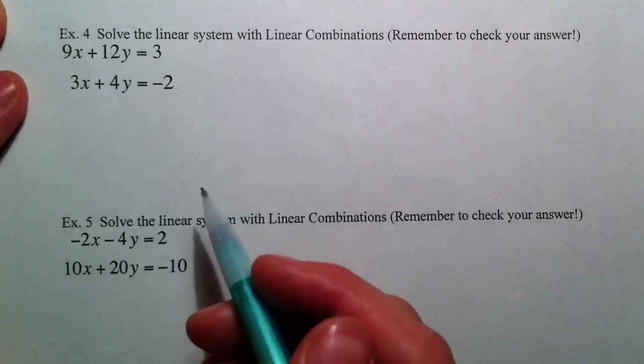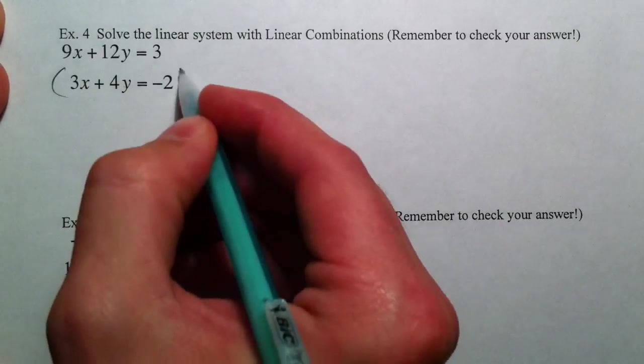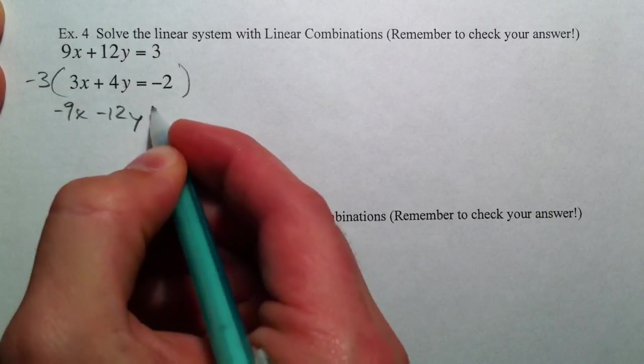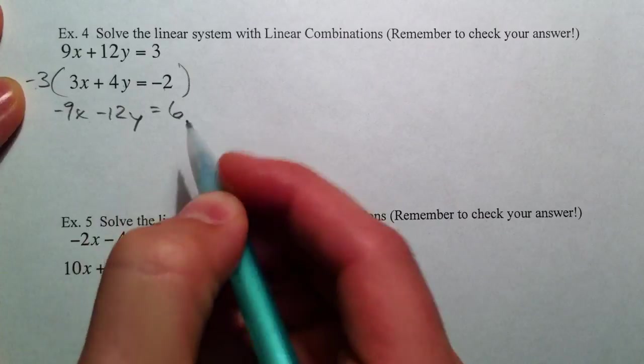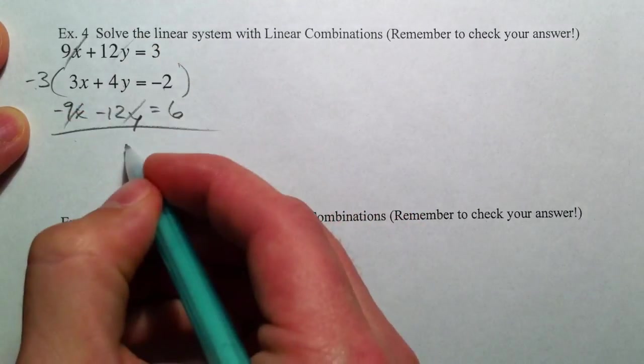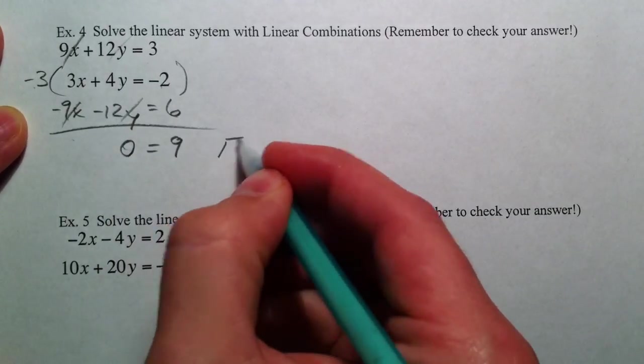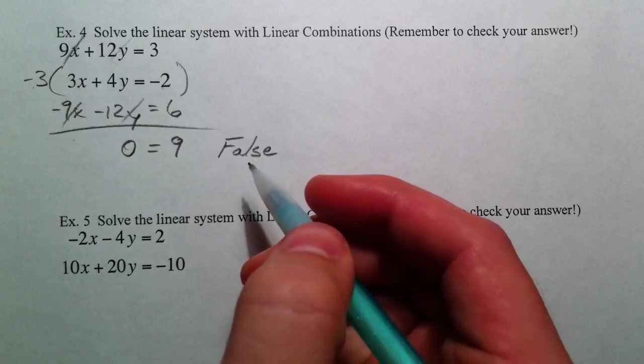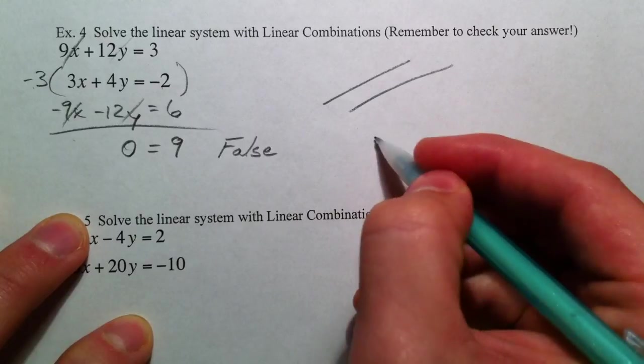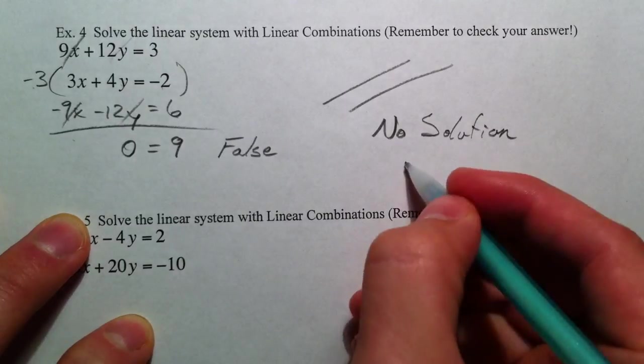So, let's use linear combinations. So, we have 9x plus 12y equals 3 and 3x plus 4y equals 2. If I multiply this by negative 3, I can get negative 9x minus 12y equals positive 6. Remember to multiply both sides. So, the x's cancel. The y's cancel. And so, we have nothing left over on the side. And 3 plus 6 is 9. That's a false statement. So, 0 equals 9. And so, everything canceled out. We can't solve for a variable. This is parallel lines. So, the answer is that there is no answer. No solution. We have parallel lines.